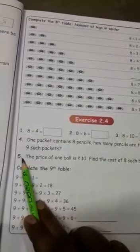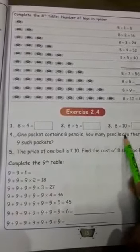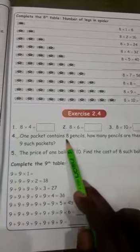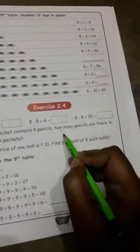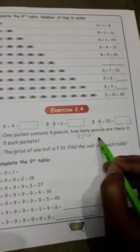Next exercise 2.4. These are also look like the same. You have to write the tables. And fourth sum: one packet contained eight pencils, how many pencils are there in nine such packets? One packet has eight pencils. You have to multiply 8 into 9 equals... 8 nines are 72. You should do in your book and maths note.